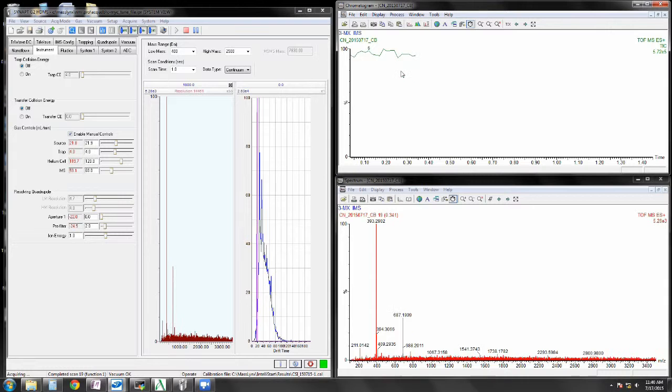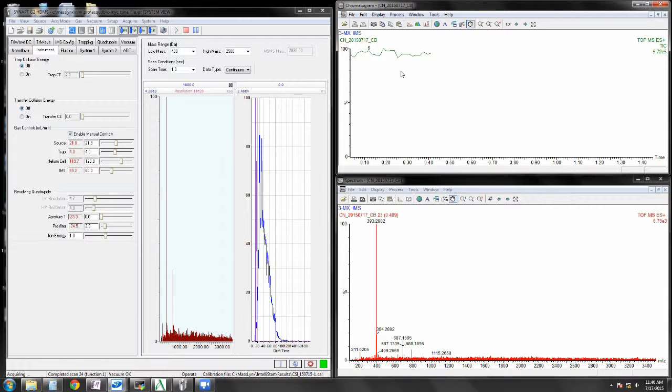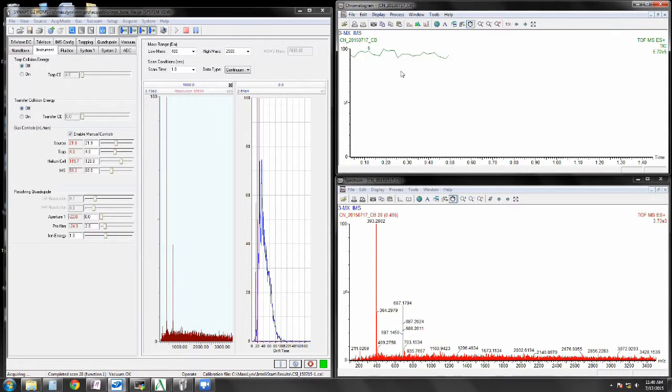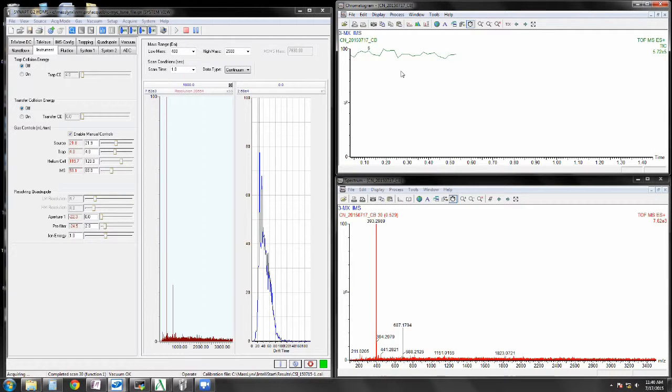Drift tube ion mobility works on a different principle, whereas ions are injected into a cell of inert gas, and depending on the amount of collisions with gas molecules, it will get slowed down. Therefore, depending on how slow it travels, large ions will travel slower. Drift tube ion mobility allows direct measurement of cross sections, whereas traveling wave needs to be calibrated to acquire cross sections from your data.